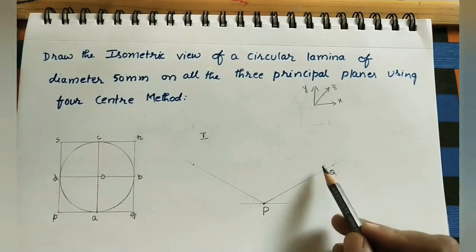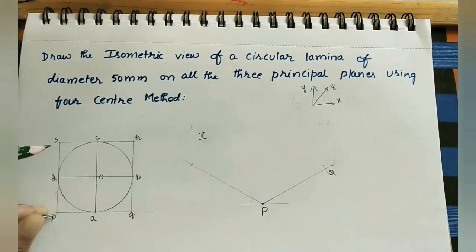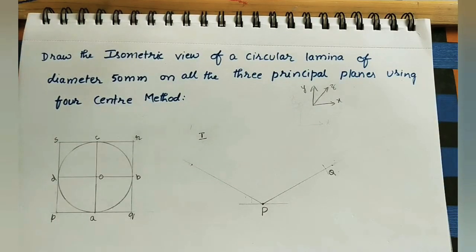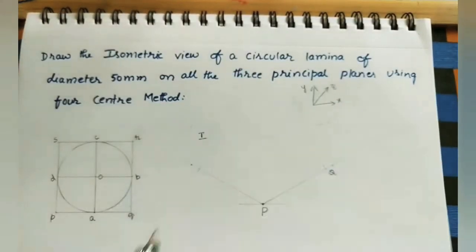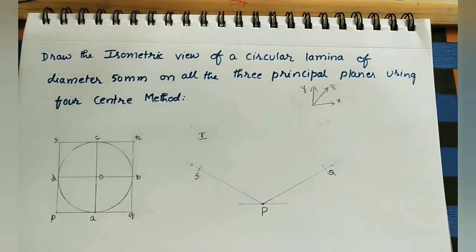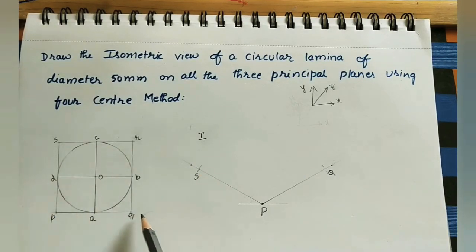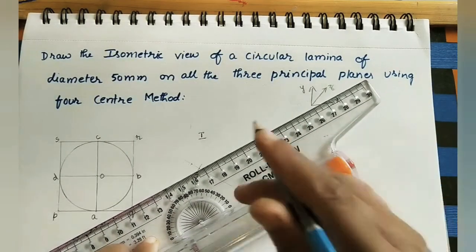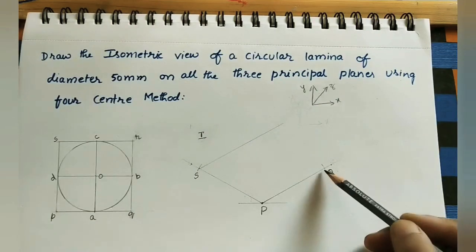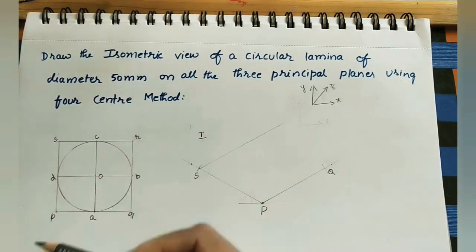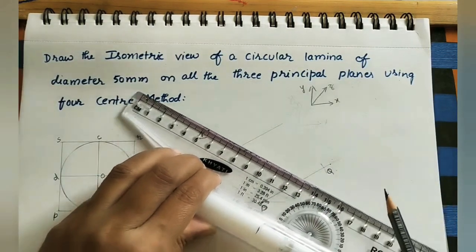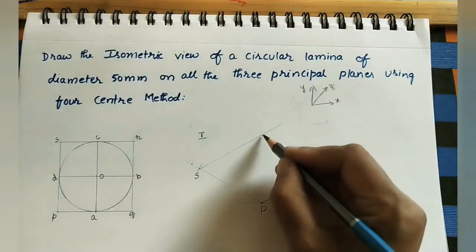Mark the PS length on the other inclined side of P - since it is a square, PQ and PS lengths are the same. Using a compass with P as center, mark point S. At S, draw the SR line parallel to PQ using a roller scale. Similarly at Q, draw the QR line parallel to PS. Move the scale to get the parallel line. The intersection point of SR and QR is point R. So in the orthographic view we had a square, which now looks like a rhombus in the isometric view.